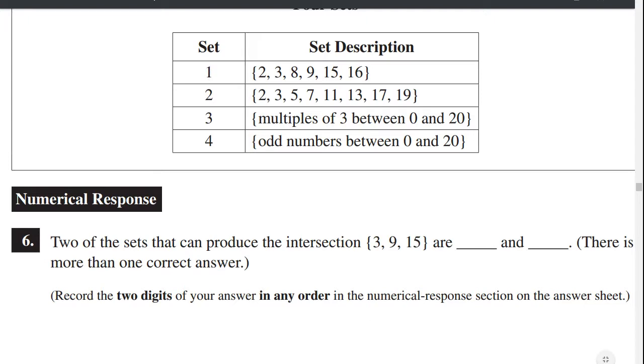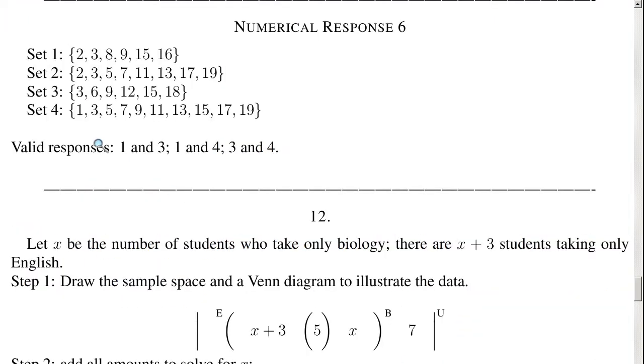But what about sets 1 and 3? Well, sets 1 and 3 have a 3, a 9, and a 15 in common. And they don't have any others in common. So there's a valid response, 1 and 3. What's another valid response? Well, let's check 1 and 4. 3 they have in common, 9 they have in common, 15 they have in common. They don't have any others in common. So another valid response is 1 and 4. Is there another valid response? Well, between sets 3 and 4 there's a 3 in common, a 9 in common, a 15 in common, and no other numbers in common. So 3 and 4 is also a valid response.